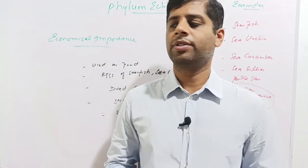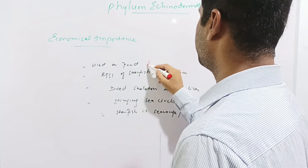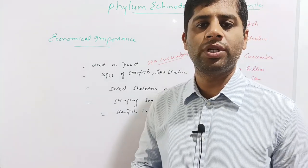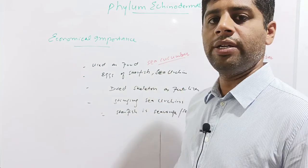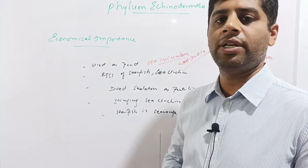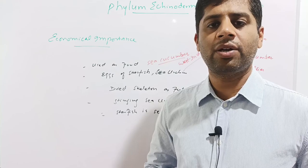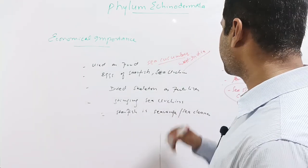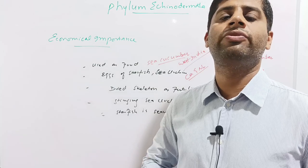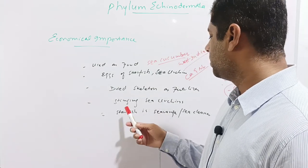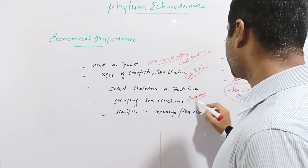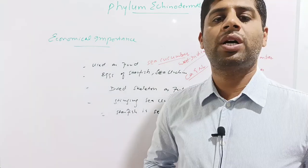Echinoderms have economic importance. Sea cucumber is used as food in Europe. The eggs of starfish and sea urchin are eaten in the West Indies. The dried skeleton of echinoderms is used as fertilizer in fields due to its high content of calcium and nitrogen. However, stinging sea urchins are poisonous and harmful. Starfish is a scavenger and is also called a sea water cleaner.